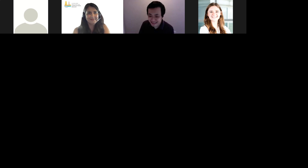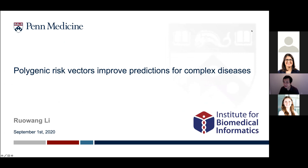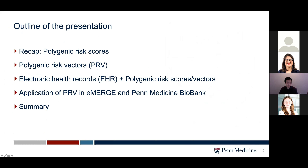Thank you, Dana. My name is Ruong Lee, and I'm very happy to have this opportunity to present today. The title of my presentation is Polygenic Risk Vectors Improve Predictions for Complex Diseases. The outline covers a brief recap of polygenic risk scores, or PRS, followed by an introduction to polygenic risk vectors, or PRV, then how we use electronic health record data to develop and apply PRV and PRS, some applications in the eMERGE and Penn Medicine Biobank data, and finally a summary.